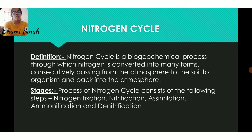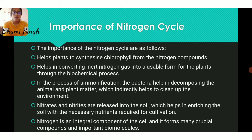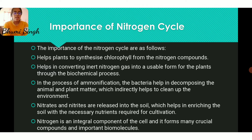The stages required are nitrogen fixation, nitrification, assimilation, ammonification, and denitrification. The importance of the nitrogen cycle is that nitrogen in the atmosphere is in an abundant amount but it is not useful in the form which is present. So we convert it into different forms for our use, like for photosynthesis and chlorophyll from nitrogen compounds. It helps in converting inert nitrogen gas into a usable form for plants and is an integral component of cells for many crucial compounds.